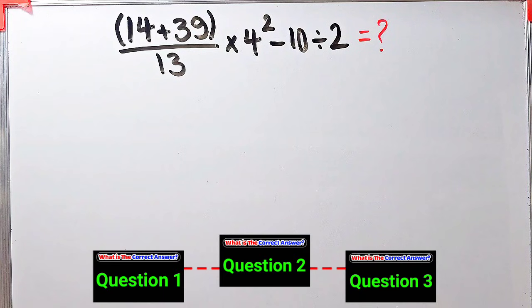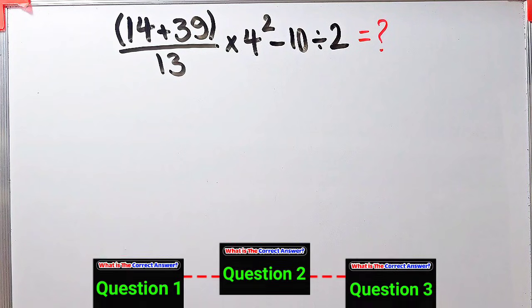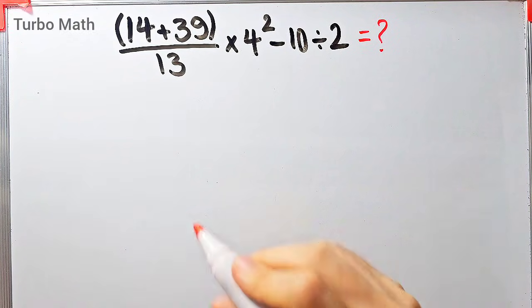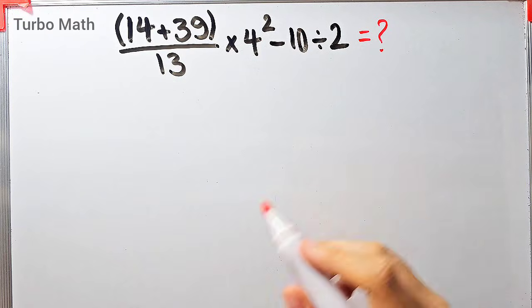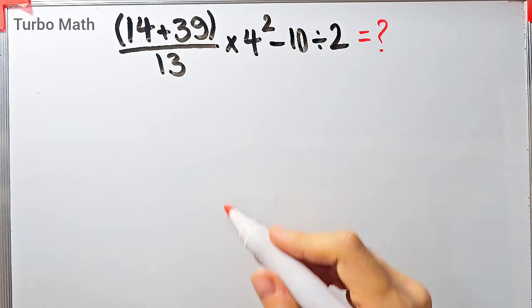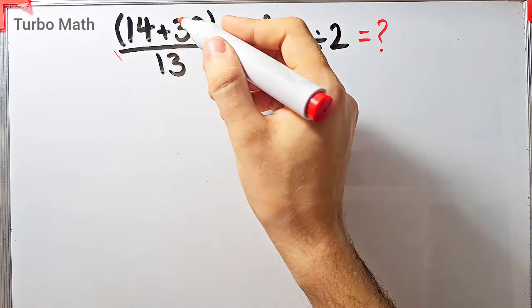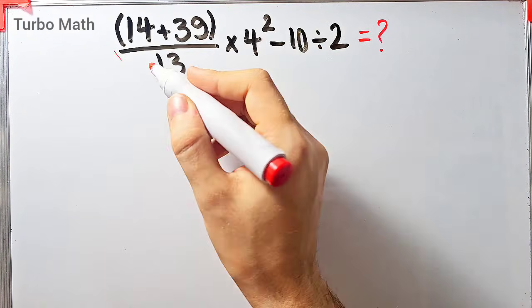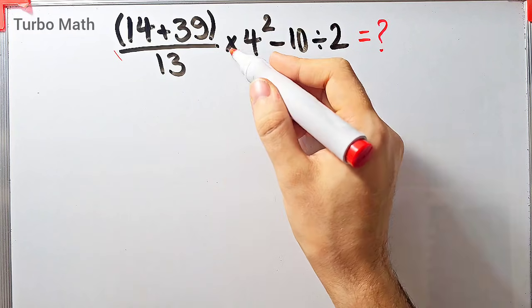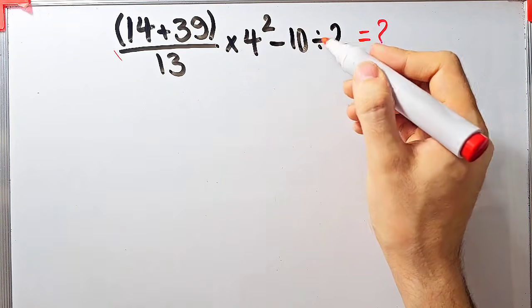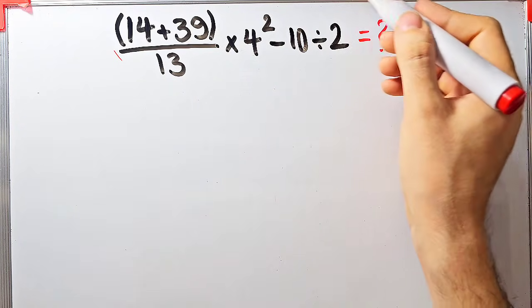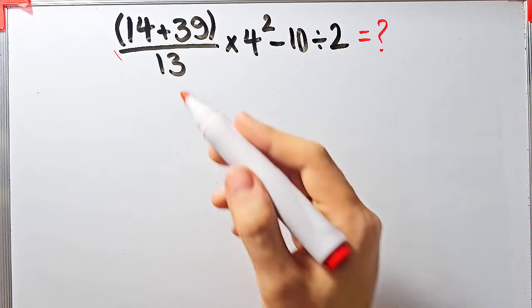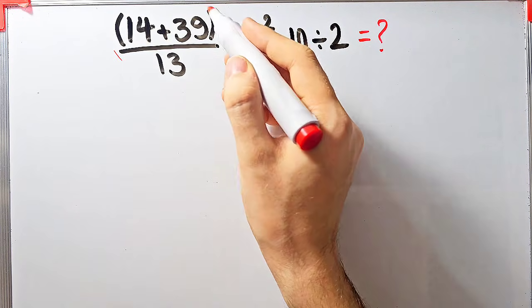Hi friends, welcome to Turbo Mass channel. In this video we are going to solve three questions about the PEMDAS rule. In the first question we have (14 + 39) over 13, times 4 to the power of 2, minus 10 divided by 2. What is the answer of this question?